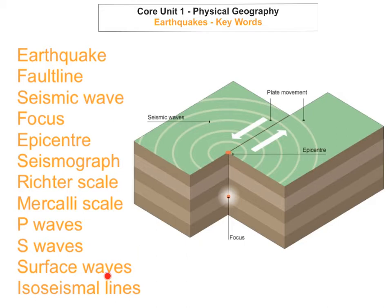The last keyword is isoseismal lines. Isoseismal lines are lines of equal intensity. They show the decrease of intensity away from the epicenter — the greater the intensity, the closer the lines are to the epicenter. As you move further away, they decrease in intensity. They basically show lines of equal seismic intensity.